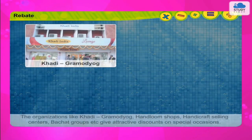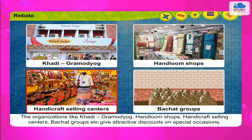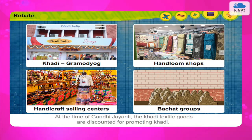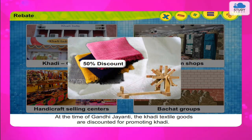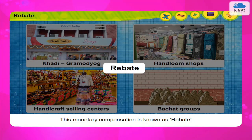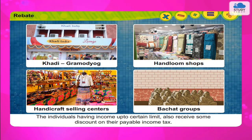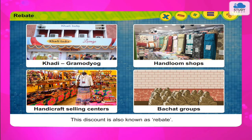Rebate. Organisations like Khadi, Gramudyog, Handloom Shops, Handicraft Selling Centres, Bachat groups, etc. give attractive discounts on special occasions. For example, at the time of Gandhi Jayanti, Khadi textile goods are discounted to promote Khadi. At such times, the amount of discount is compensated by the government; this monetary compensation is known as rebate. Hence, rebate is also a type of discount. Individuals having income up to a certain limit also receive some discount on their payable income tax, which is also known as rebate.